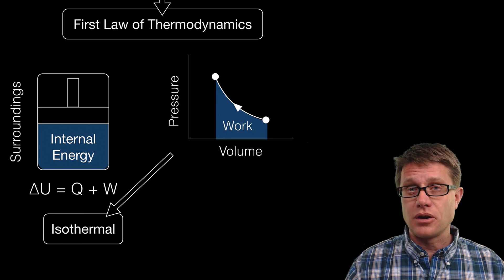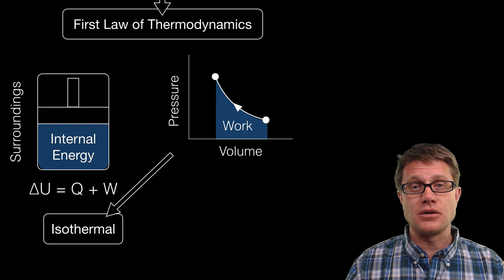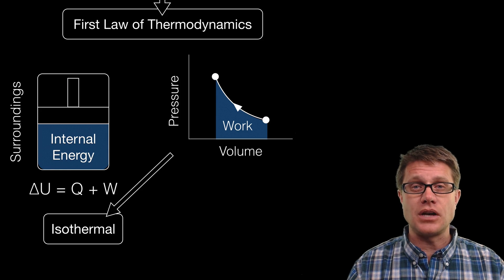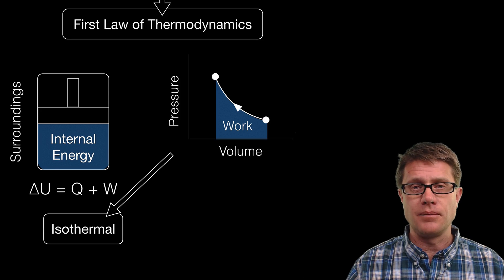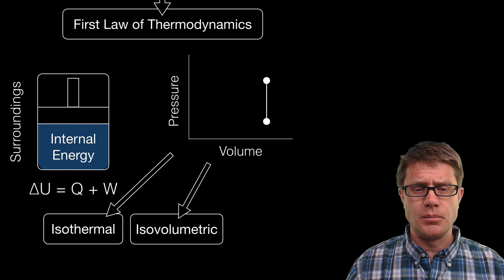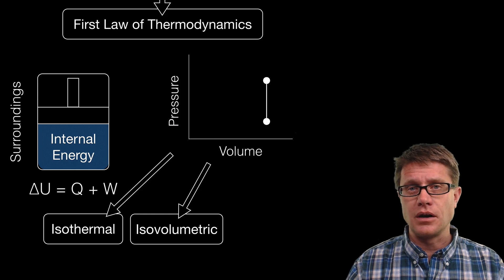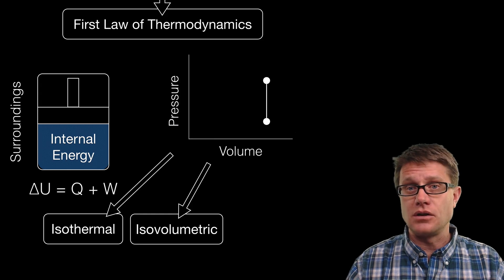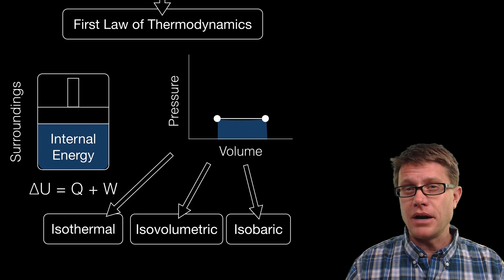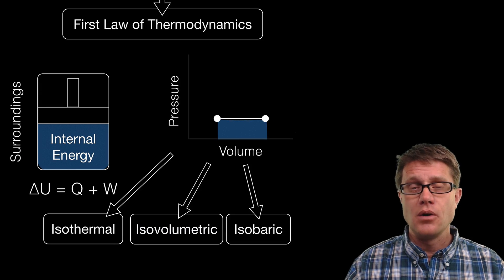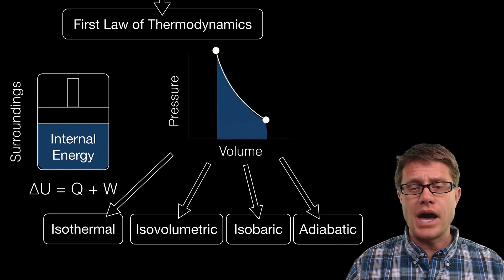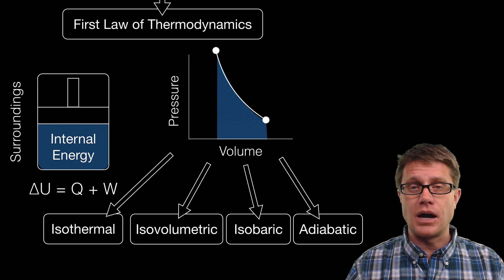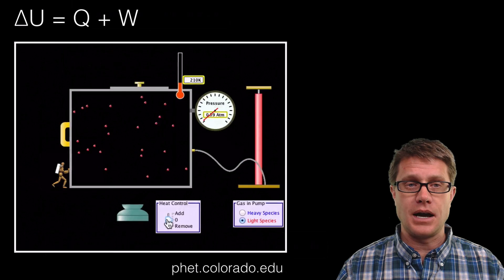This would be an isothermal process since we are keeping temperature the same. In AP Physics 1 and 2 you do not have to do calculations — you just have to know qualitatively what is going on. We could also have a different process: isovolumetric, where we lock the volume of the piston and add energy through heat; isobaric, where we keep the pressure the same; or in the fire piston, adiabatic — where we do it so quickly that we are not allowing heat to move in and out.